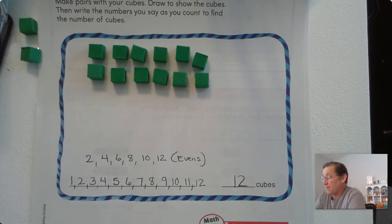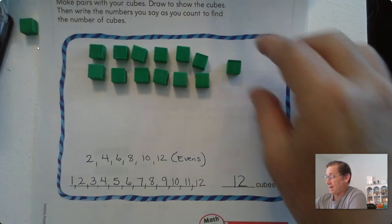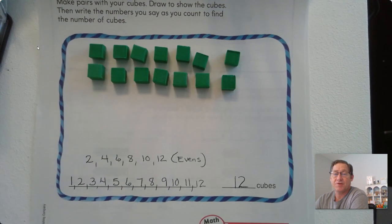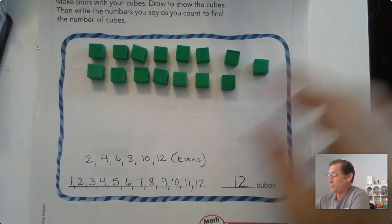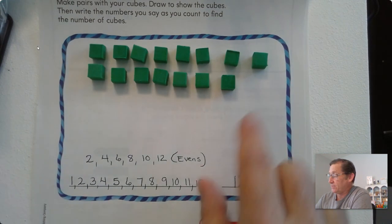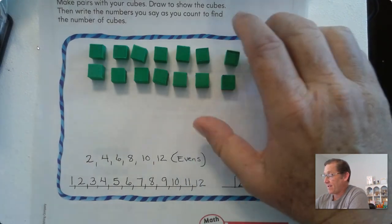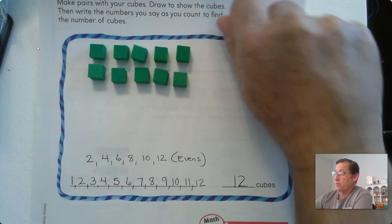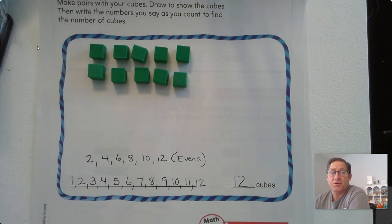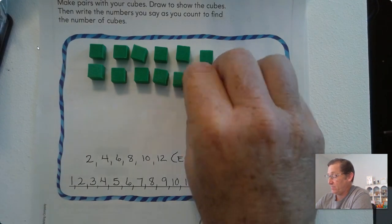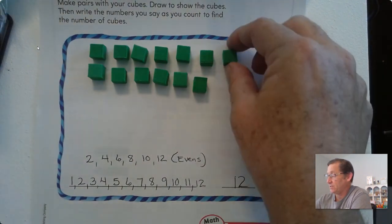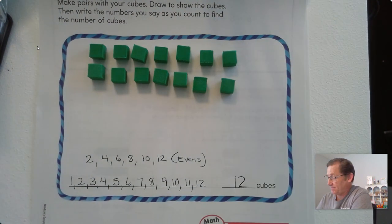Now, some of you might have come up with an odd number. Like if you had 13, you would have had an odd number. Some of you might have had 14, and you would have had 7 pairs of 2 for another even number. If you had 15 cubes, you also had an odd number because that one doesn't have a pair. So we could have had: 10 (5 pairs), 11 is odd, 12 is even, 13 is odd, 14 is even, and 15 is odd because it doesn't have a pair.